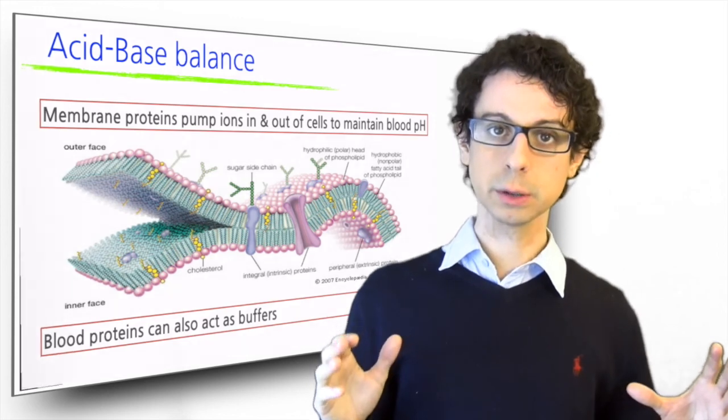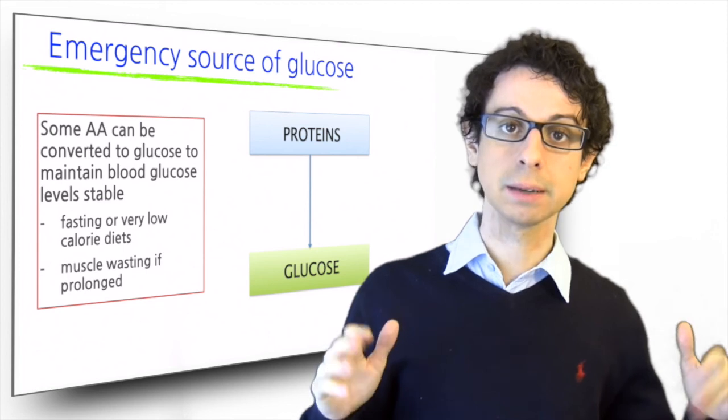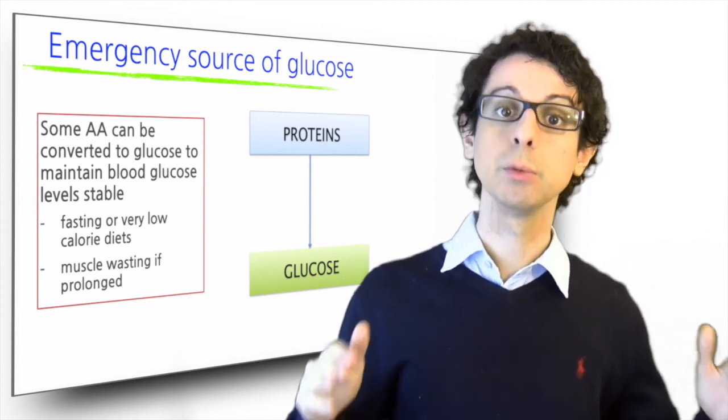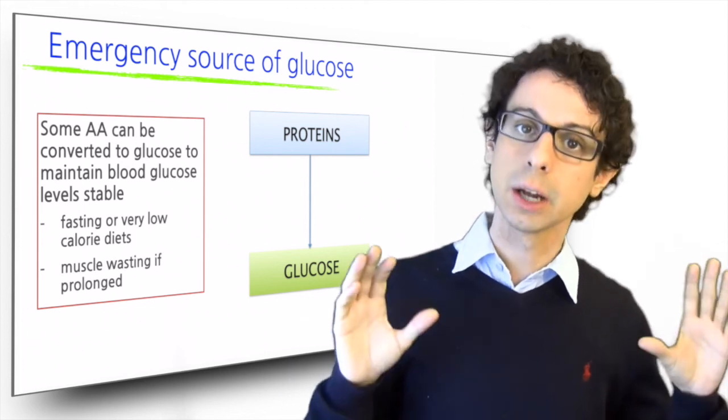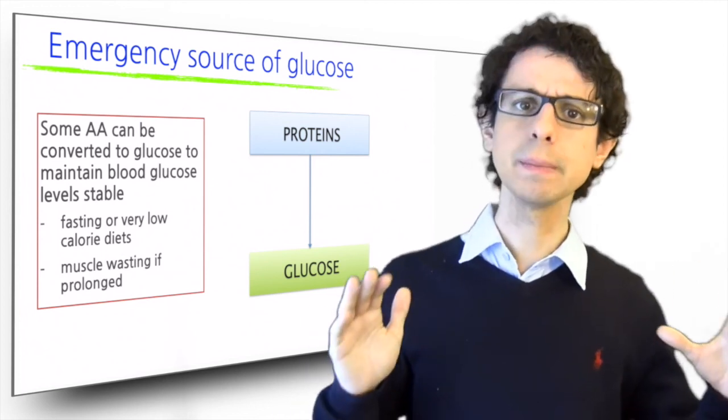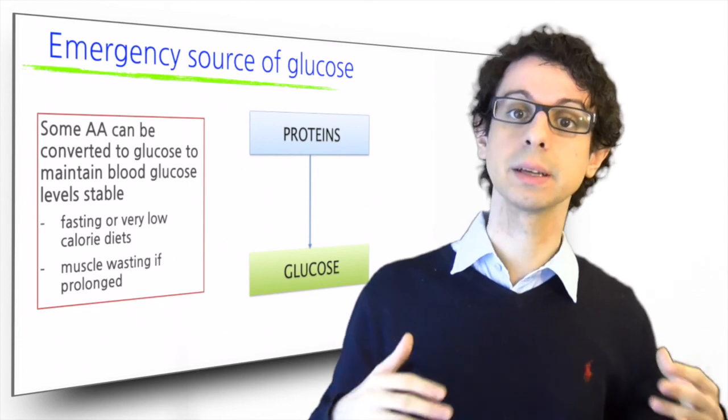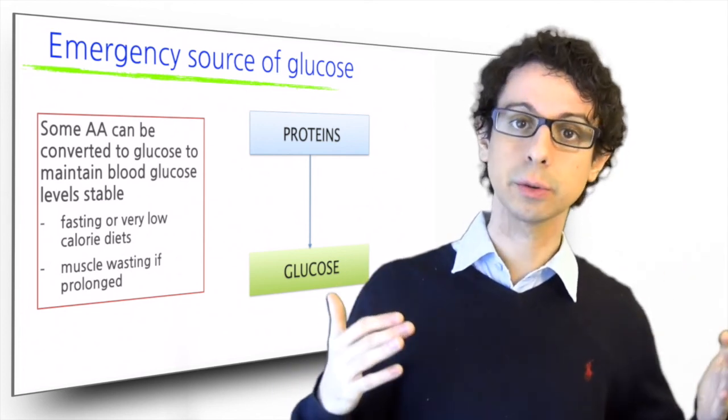Proteins can also be used as an emergency source of glucose. This is not their ideal use, but sometimes it's inevitable so that we can keep our blood glucose level stable, which is vital because some of our organs, and in particular our brain, can only use glucose to fuel their activities and not fat. We normally maintain our blood glucose by eating carbs. We also have some glycogen stores, but it's not much. And so if we fast for many hours or go on a very low calorie or a very low carb diet, we deplete our glycogen stores.